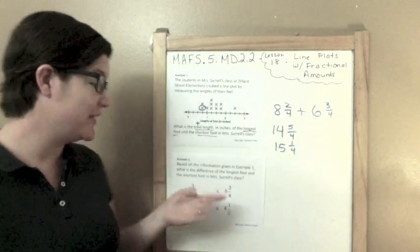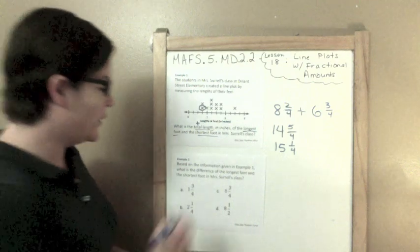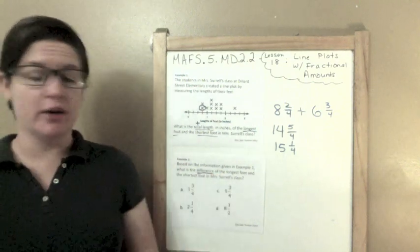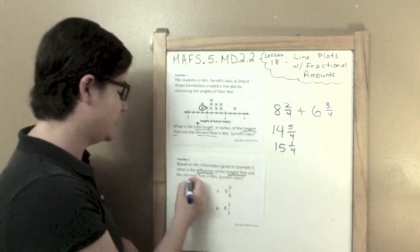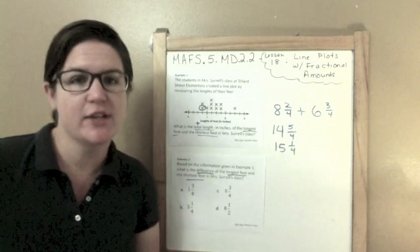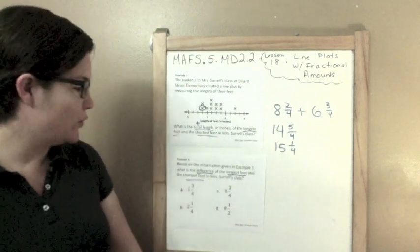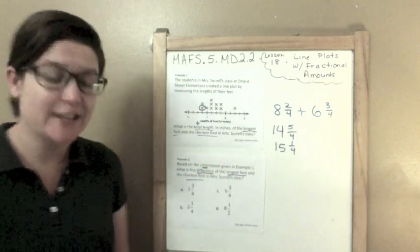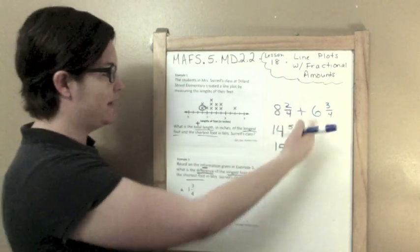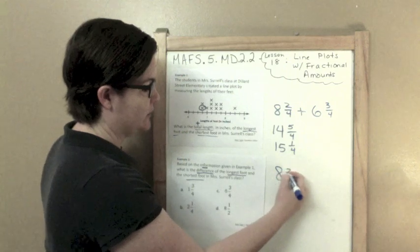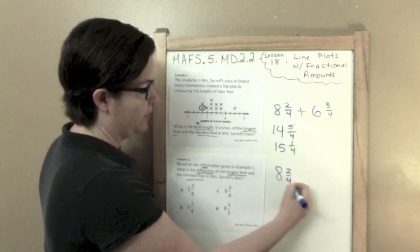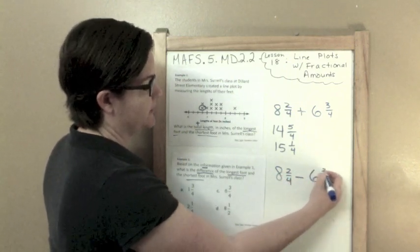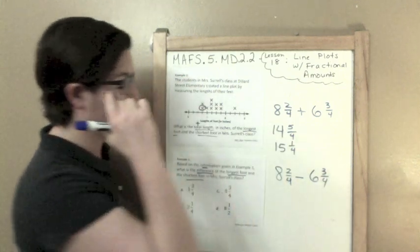Based on the information given in example 1, what is the difference of the longest foot and the shortest foot in Mrs. Sorrell's class? So now we're finding the difference which means that we need to subtract them. We're going to use the same fractional amounts.